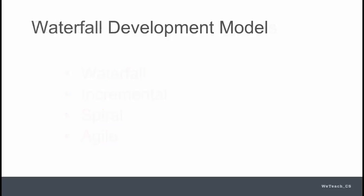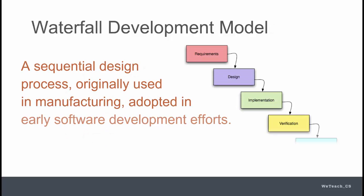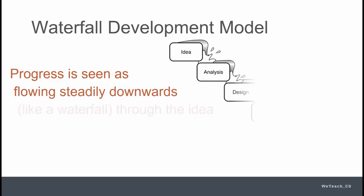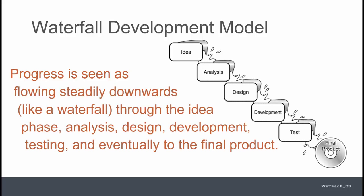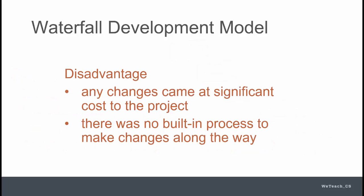Although a bit outdated, the waterfall development model is the classic one, primarily used in manufacturing, where a clear design is produced with predetermined specifications, and where production, testing, and maintenance proceed in linear fashion. Unfortunately, this development process did not work well with software development and has been replaced in time with other more effective processes. The main problem was the cost of making changes along the way, which was not a normal part of the waterfall model.